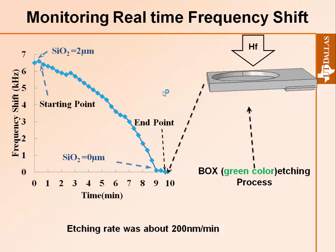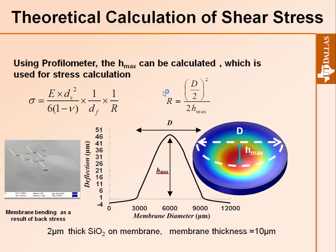Now let us go to the theoretical calculation of shear stress. The formula used is the Stoney formula — a simple formula used for shear stress calculation. To calculate shear stress we need the maximum deflection of the membrane and the membrane diameter. We used a profilometer tool in the clean room. One example output shows a maximum deflection of 46 microns for a membrane diameter of about 6 mm. An SEM image of the device under stress shows that the membrane is bent.